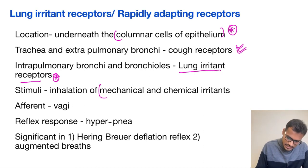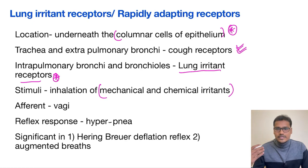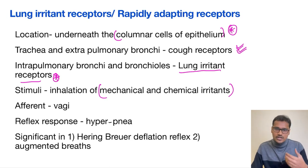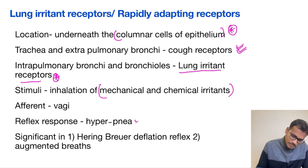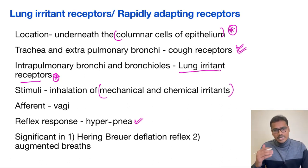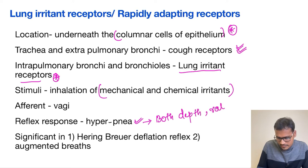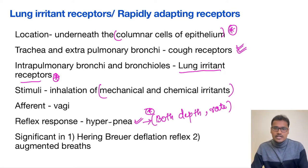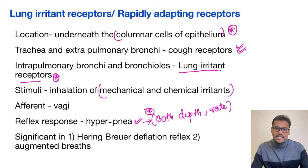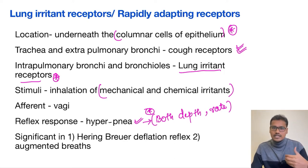The stimuli are mechanical or chemical irritants, all going via afferent vagus. The reflex action causes hyperpnea — meaning both the depth and rate of inspiration are increased. There is also a specific Hering-Breuer deflation reflex: whenever the lung undergoes severe deflation, these receptors get activated and help cause hyperpnea, taking a deep breath to expand the lung.